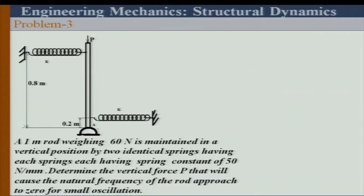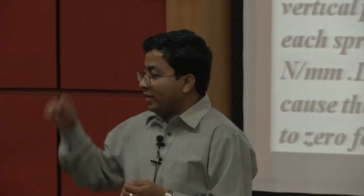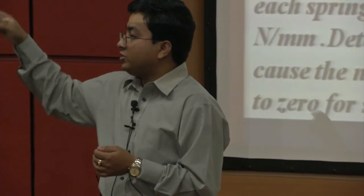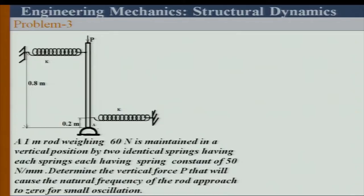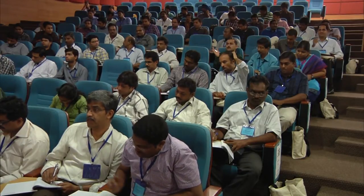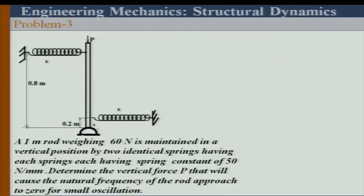Now the last problem is going to be interesting. We want to determine the P that will cause the natural frequency of the rod to approach zero for small oscillation — it is a very nice problem concerning the stability of the system. You will be able to find the P where the time period tends to infinity, or omega N equals zero. Get the equation of motion first and set omega equals zero or T tends to infinity.